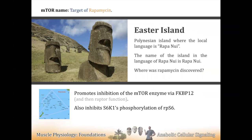Rapamycin — that's what the R stands for in mTOR: mammalian target of rapamycin. What is this thing? Go to the Polynesian islands off the coast of Chile — Easter Island, famous for those giant stone faces. The second most famous, and far more important thing to come out of those islands is rapamycin, through which we've come to understand mTOR signaling. The island's language is Rapanui, and the name of the...